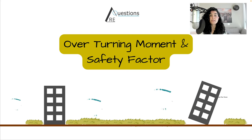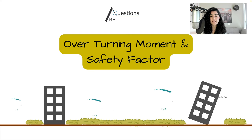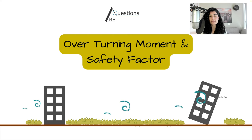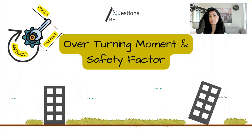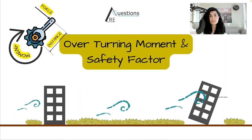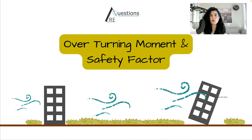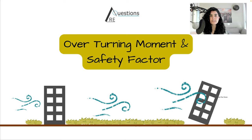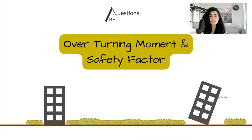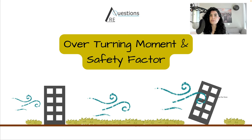Let's talk about overturning moment and safety factor and solve a couple of questions. When buildings are under lateral loads like earthquake or wind, they have a tendency to tip over on one side, especially tall and slender buildings. This load can be calculated by multiplying the lateral load by its distance to the moment point. When you find the overturning moment, you can calculate how heavy or how stable your building should be to resist these lateral loads.